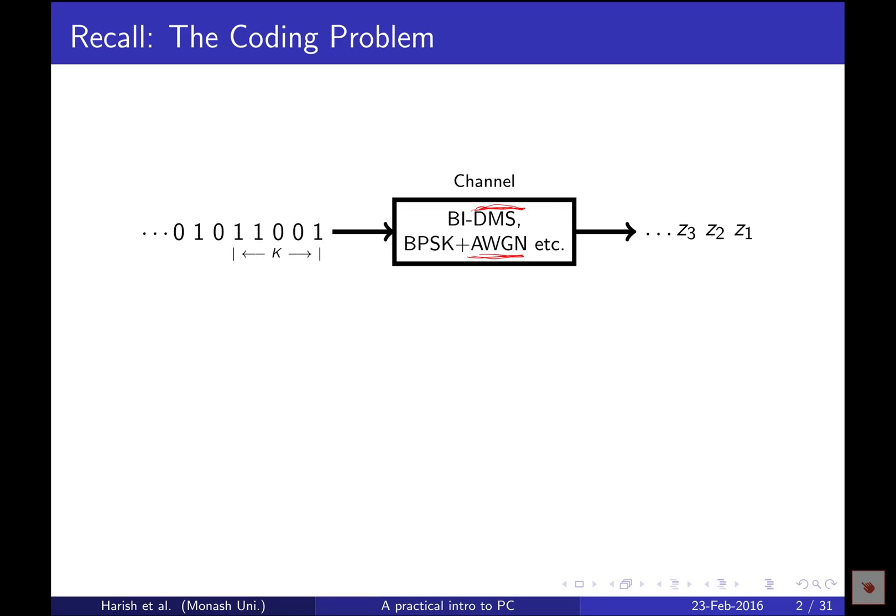We are talking about binary input versions of these channels, so we are transmitting bits over this channel and receiving noisy versions of those bits at the receiving side. All we want to do is to recover the originally transmitted information bits from the noisy received versions.